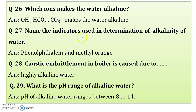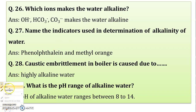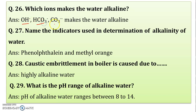The question is: which ion makes the water alkaline? The alkalinity-causing ions are OH⁻ (hydroxyl ion), bicarbonate ion, and carbonate ion. These three ions make the water alkaline.